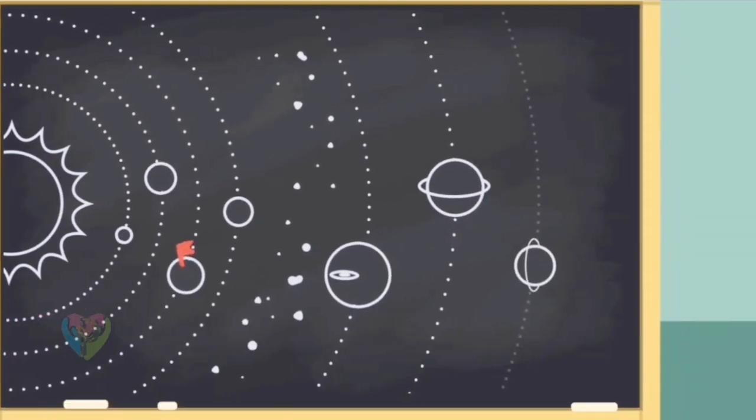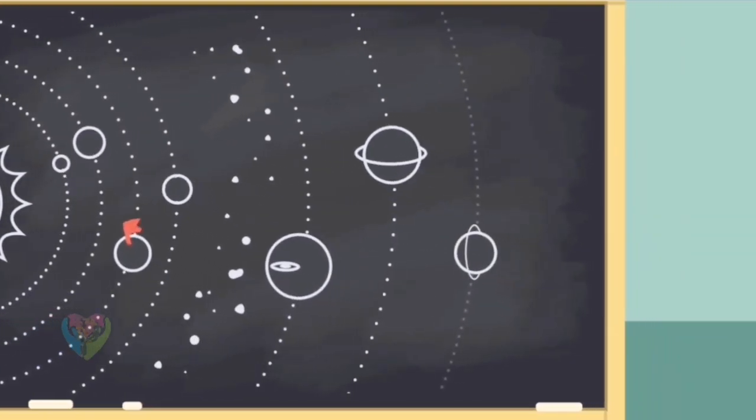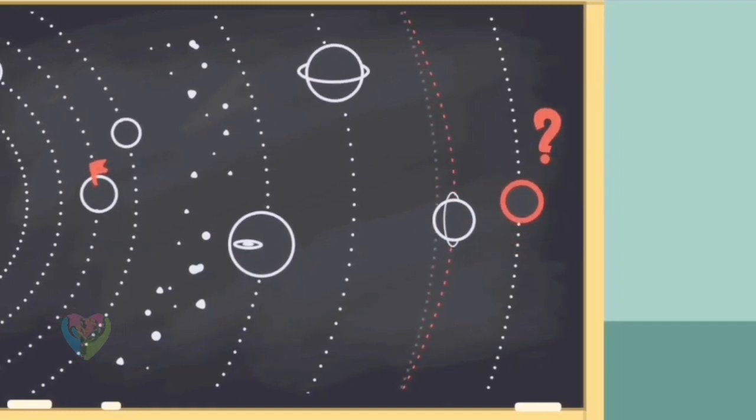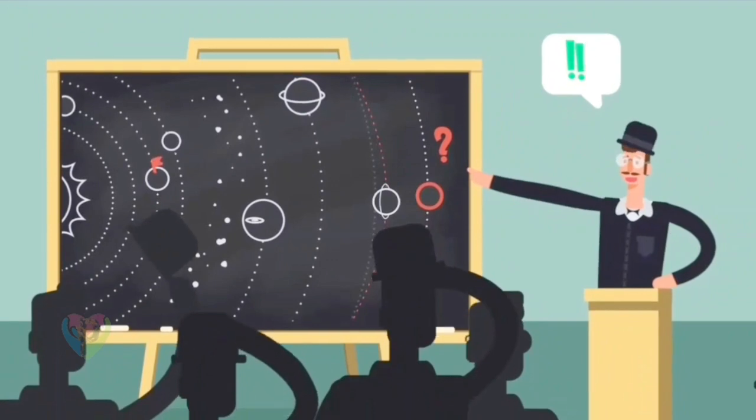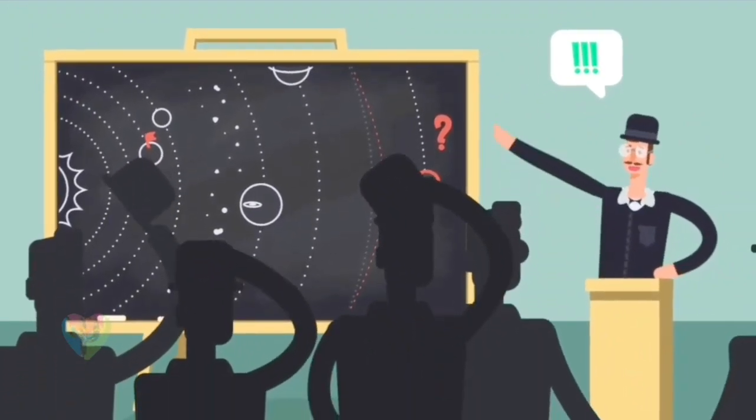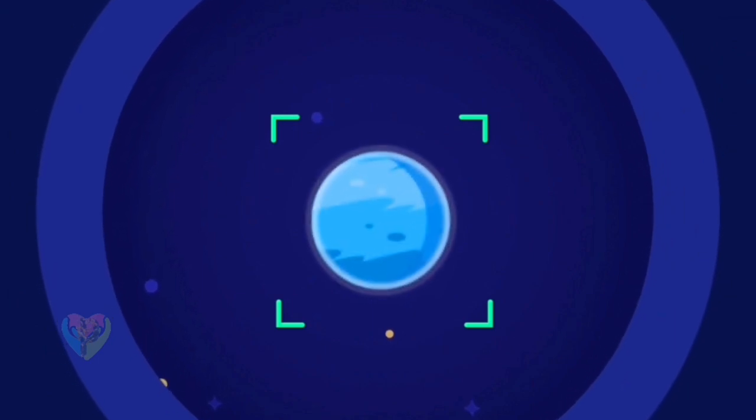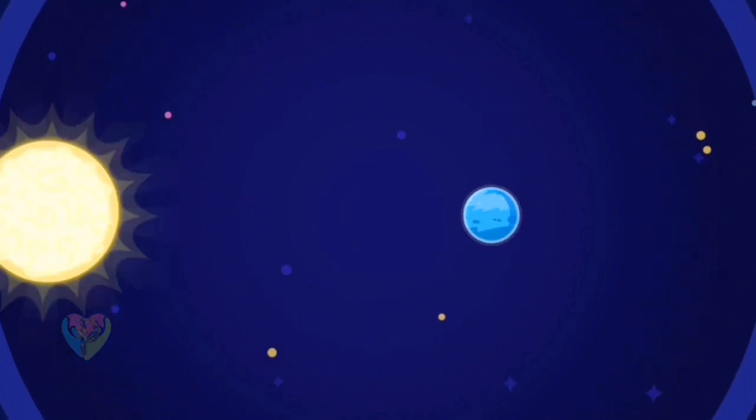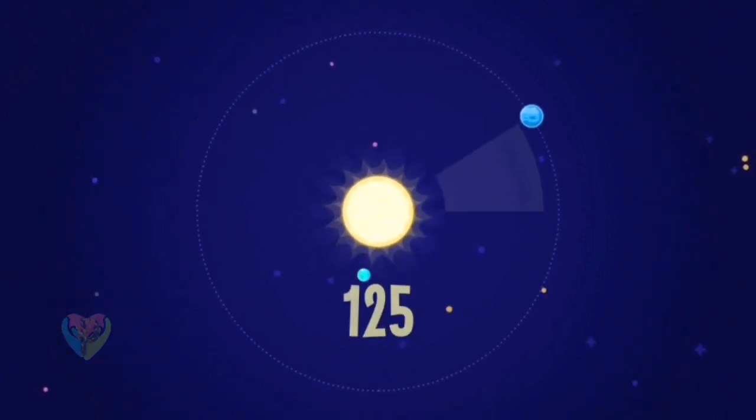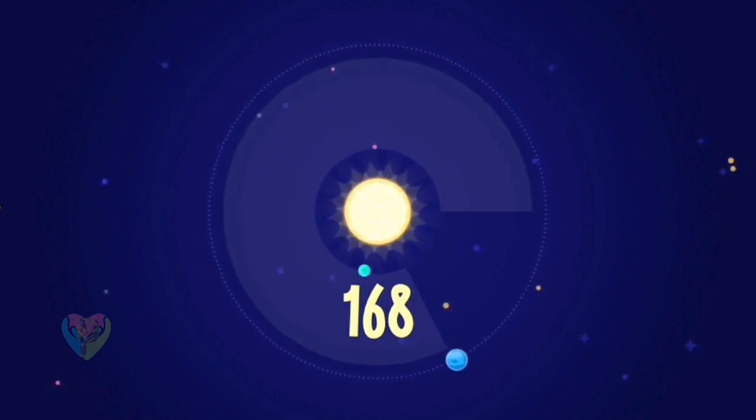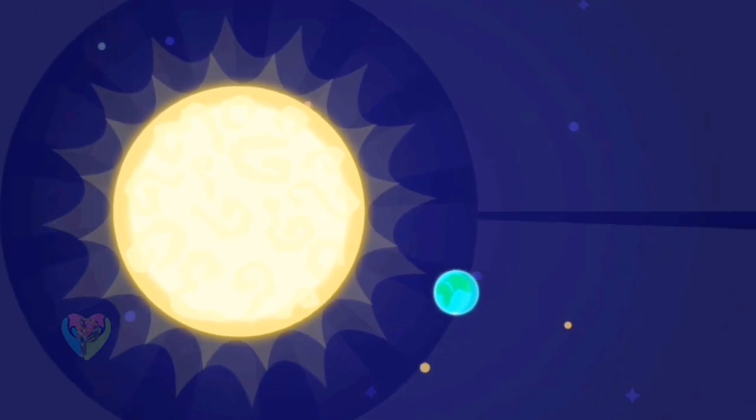After the discovery of Uranus, it took 60 years and a small area of its orbit to notice that there was an unknown object affecting its trajectory. This is the way Neptune, the eighth planet of the solar system, was first predicted and later discovered. A year on Neptune lasts for 168 Earth years. Since its discovery, only one year has passed on Neptune.